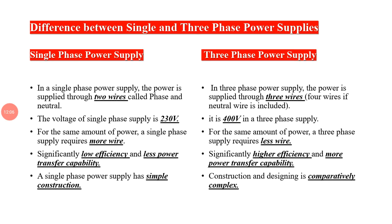Comparing single-phase and three-phase: single-phase can provide 230 volts, whereas three-phase provides 400 volts. For the same amount of power, a single-phase system requires more wire, whereas three-phase requires less wire. Single-phase has lower efficiency and less power transfer capability, while three-phase is significantly higher in efficiency and power transfer capability. Single-phase design and construction is simple, whereas three-phase is comparatively more complex.